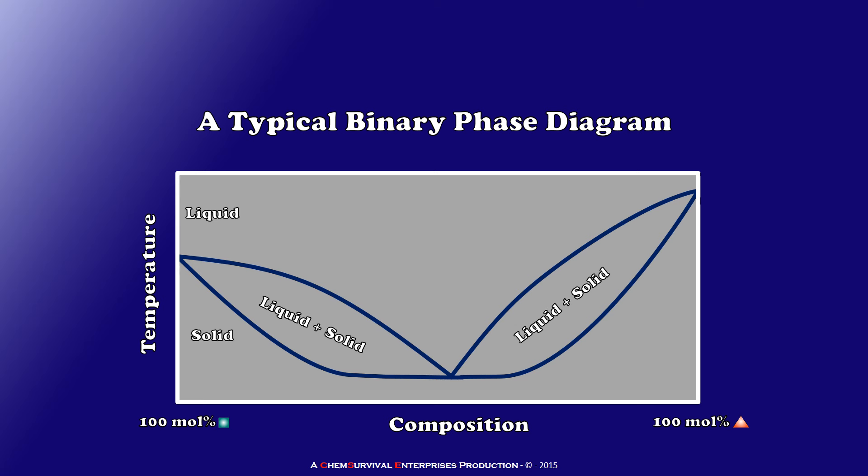Now if I were to have turned that cube so that the face that interests me is pointing directly at us, we'd see something like this: what's known as a binary phase diagram where we now have an axis of temperature and one of composition instead of pressure and temperature.